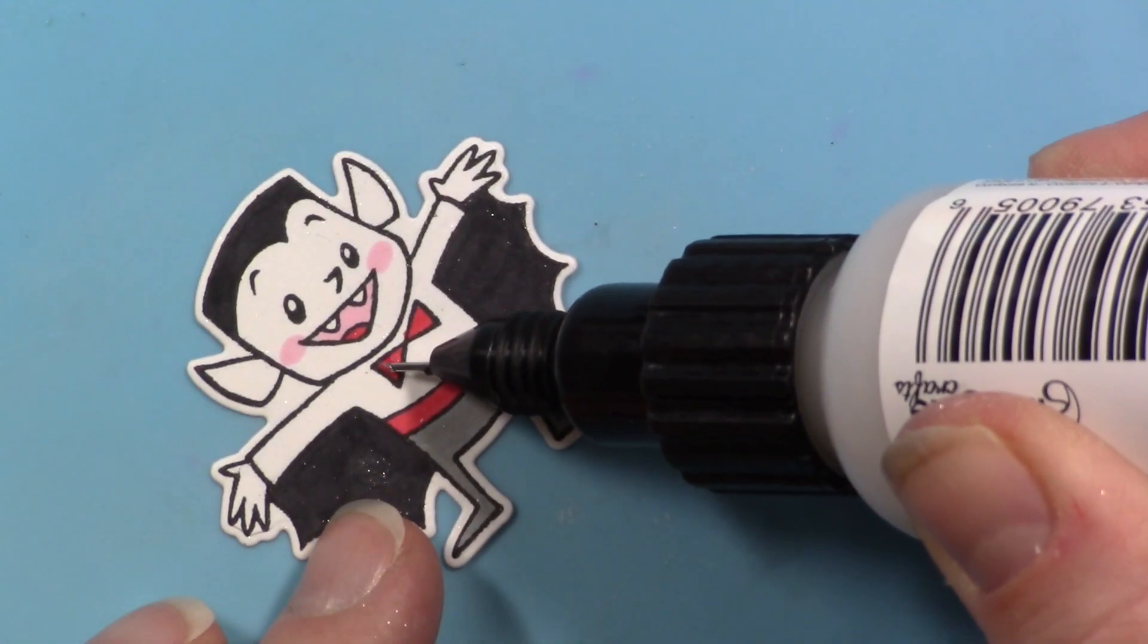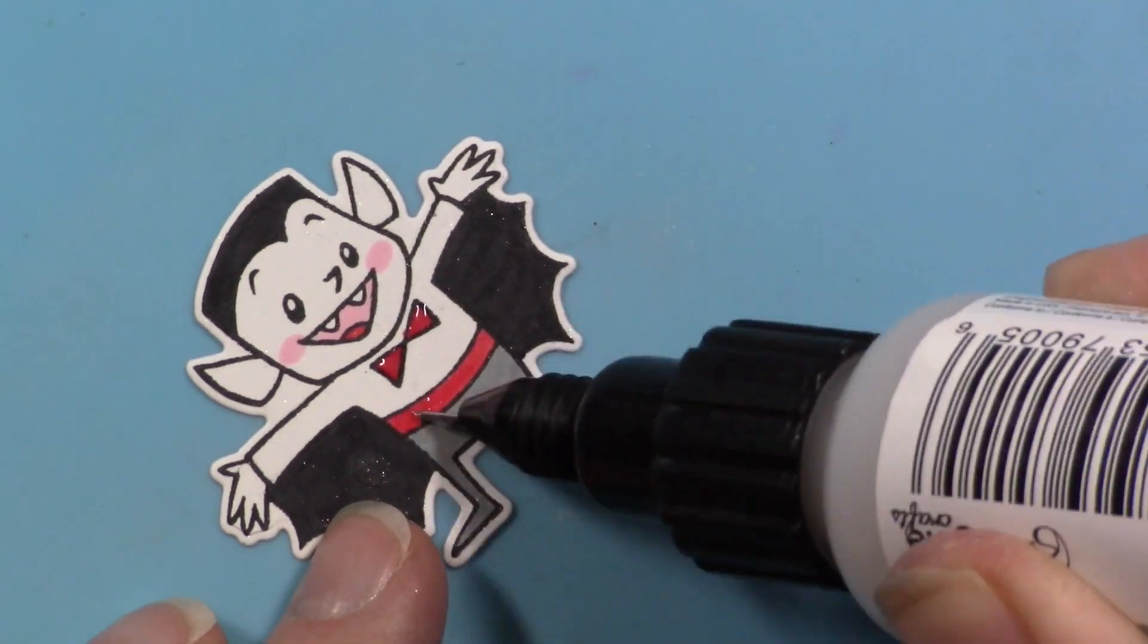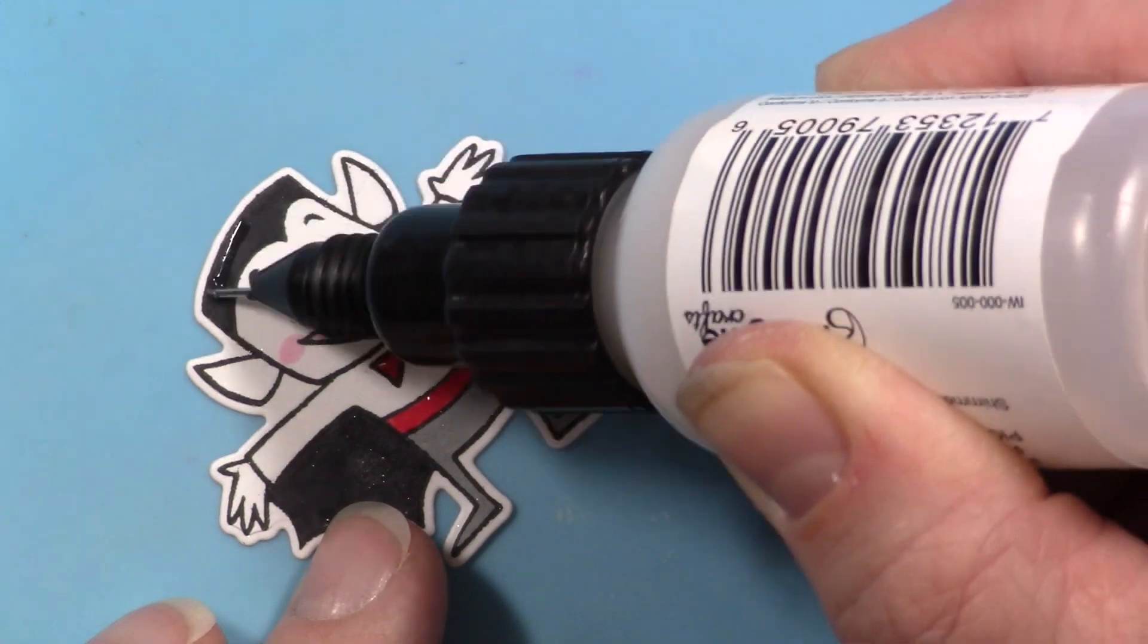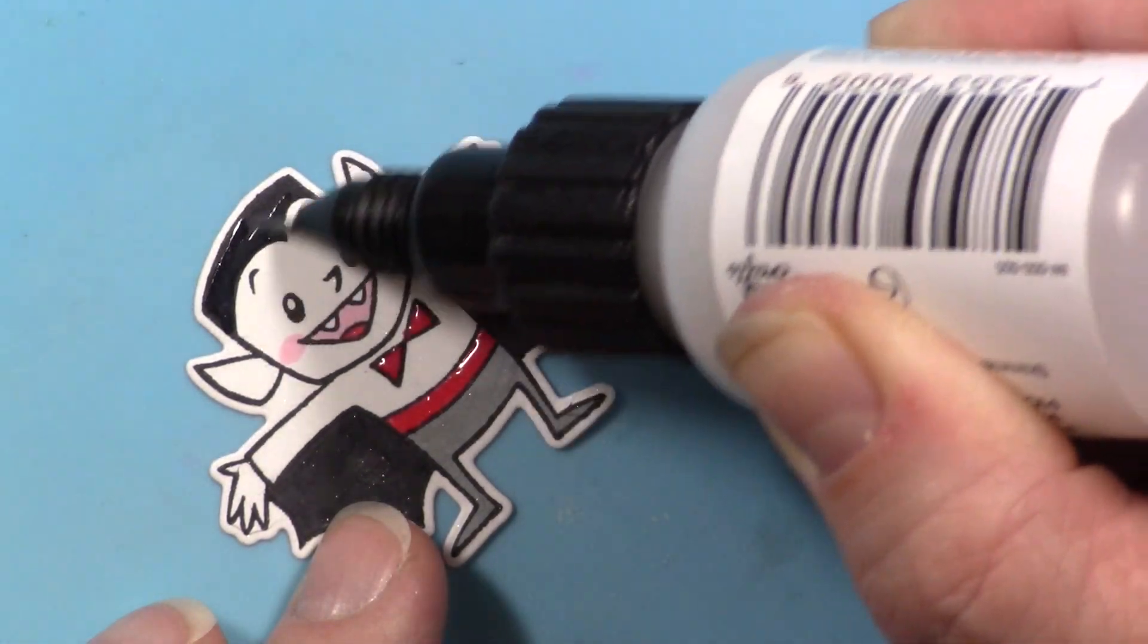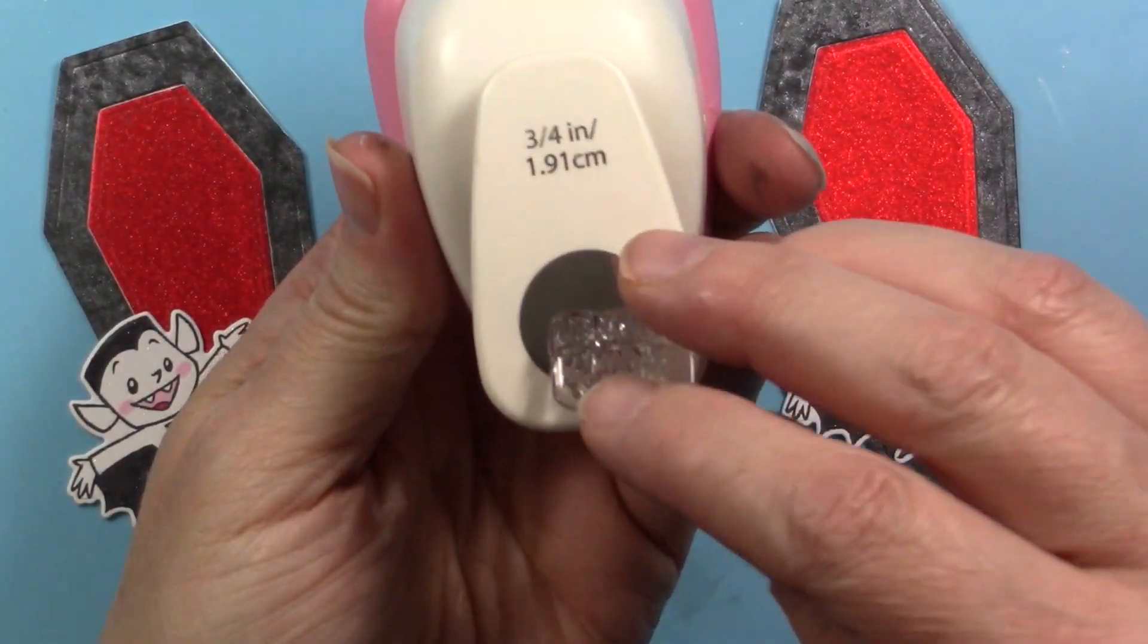So I'm going to show you here, I just squeeze a little bit out so I don't get any bubbles, and then I go right to the surface. And this is the clear shimmer, and I add that right to his little belt and bow tie, and then also I'll put a little bit on his hair. Because it colored black and it's going to dry clear, it's just going to give a little bit of shimmer.